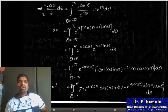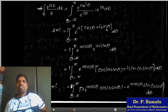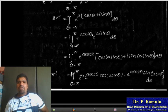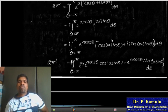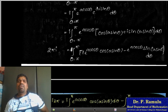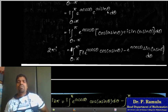Now e^(iθ) = cosθ + i sinθ, so e^(a e^(iθ)) = e^(a(cosθ + i sinθ)) = e^(a cosθ) · e^(ia sinθ). Using Euler's formula, e^(ia sinθ) = cos(a sinθ) + i sin(a sinθ). So the integral becomes i times the integral from -π to π of e^(a cosθ) [cos(a sinθ) + i sin(a sinθ)] dθ.